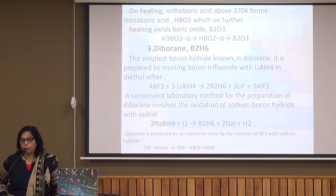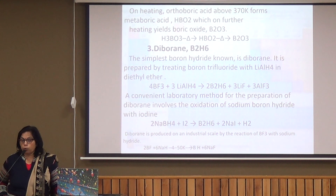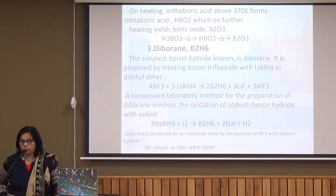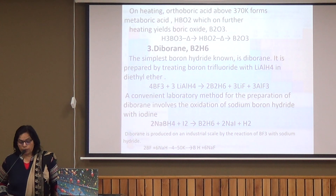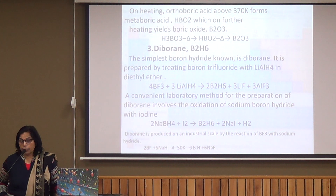Now we come to hydrides of boron. Hydrides of boron are called boranes, and the most important borane is diborane, B2H6. In BH3, boron does not complete its octet because it is a non-metal and shares only 3 electrons with 3 hydrogen atoms; hence it dimerizes to form diborane B2H6. The preparation of diborane involves the reaction of BF3 with LiAlH4, which is converted into B2H6.